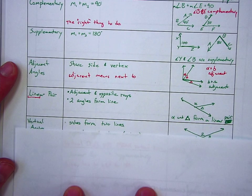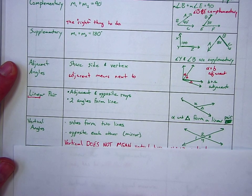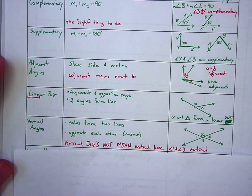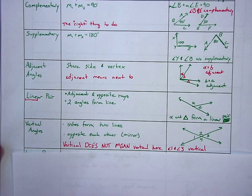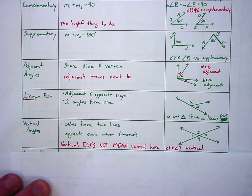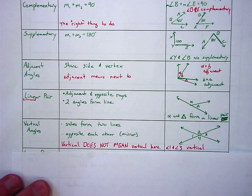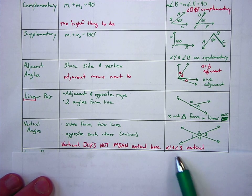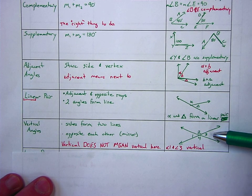Next vocab word. Vertical angles. Now, I don't actually like the name vertical angles because to me it implies that they're going to be vertical, they're going to be up and down. And that has absolutely nothing to do with it. They're the sides form two lines. They're opposite from each other. You're thinking about a mirror. So if you look at this, one and three are vertical, and so are two and four.